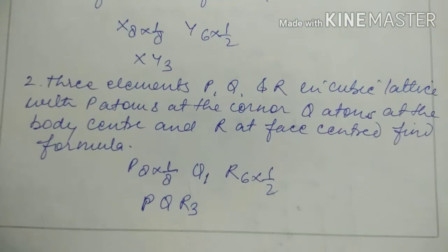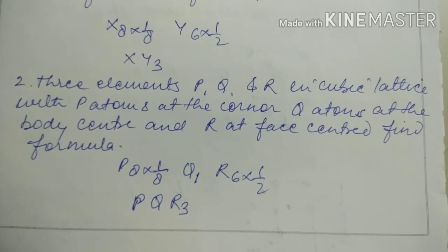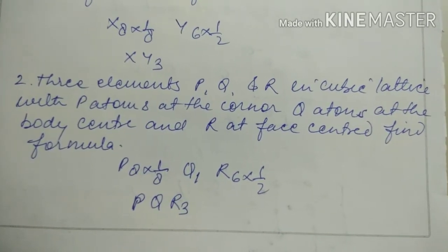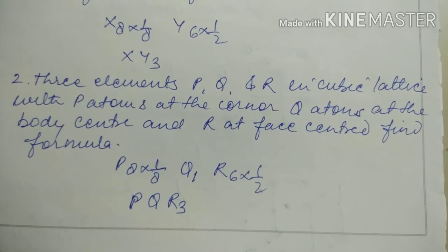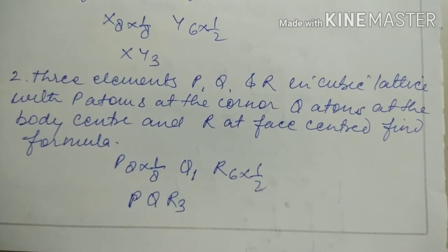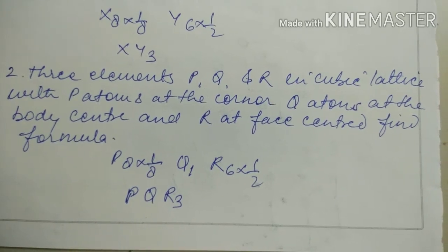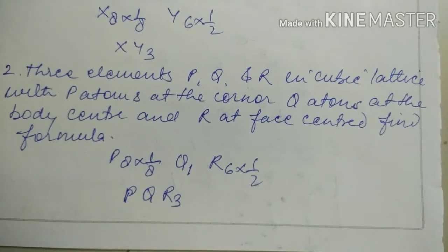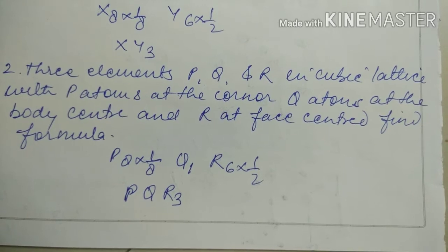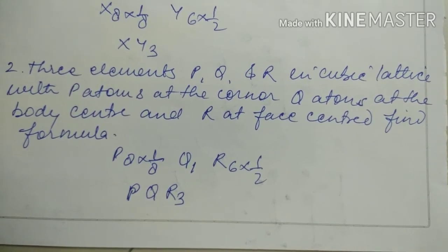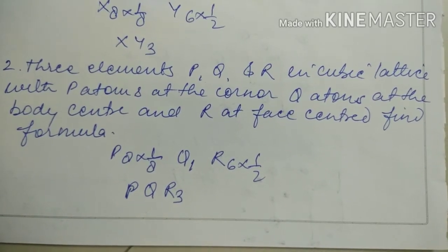Next question: three elements P, Q, R in a cube lattice with P atom at the corner of the cube, Q atom at the body center, and R at the face center. Find out the formula. So P is FCC, it means 8 times 1/8, which is 1. Q is BCC, means 1. And R is FCC, 6 times 1/2, which is 3.